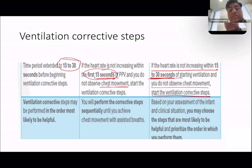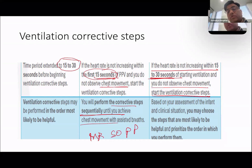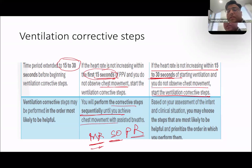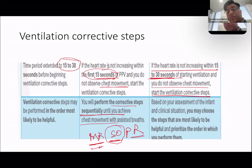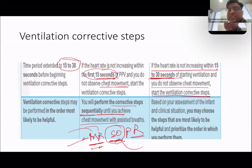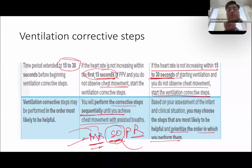Next, ventilation corrective steps order has changed. Previously we performed MR SOPA in sequential pairs. Now there is no need to go sequentially — no need to perform ventilation corrective steps in a specific sequence or order. Instead, assess clinically and practically which step will benefit most. For example, if the baby has airway secretions, go directly to suction rather than starting with mask adjustment or repositioning. Prioritize the most beneficial step and go directly to it.